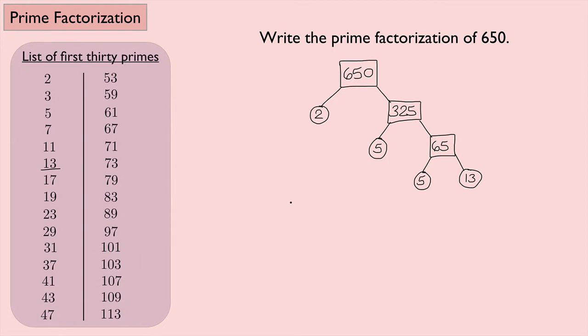So now to write the prime factorization of 650, I just look at all of the things that are in the circles here. So I have a 2, a 5, a 5, and a 13. So that's 2 times 5 times 5 times 13. But you don't normally write it like that. If you have any repeats, usually you use exponents. So I would say 2 times, and then instead of 5 times 5, I would write 5 squared, and then 13. And that's the prime factorization of 650.